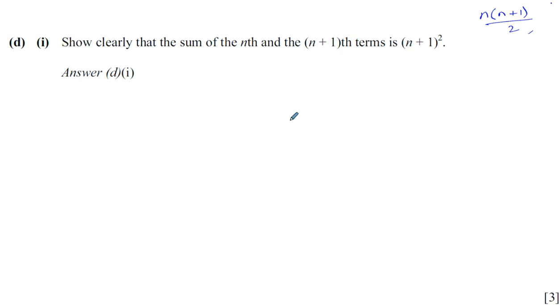Okay, so show clearly that the sum of the nth and the n+1th term is n+1 squared. Now, I'm going to change the question in the beginning to try to make you understand what's going on here. Supposing it said, show clearly or find the sum of the third term and the 20th term.